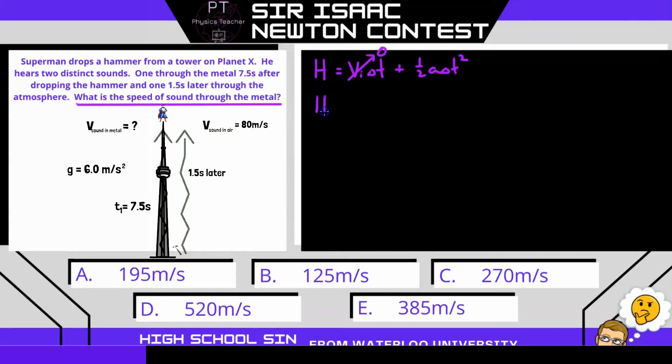And then we have one-half a times delta t squared. So our height is then going to be equal to one-half a, where a is 6, so that's just going to be 3, times time squared. So let's rearrange this to solve for the time it takes for the hammer to fall. So we can do h divided by 3, and then take the square root of that.